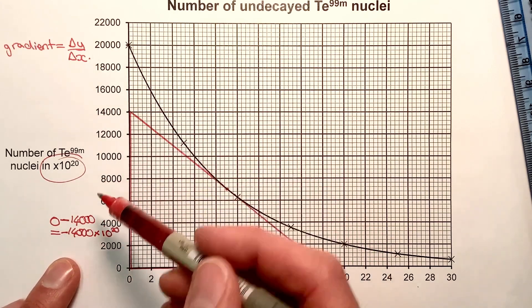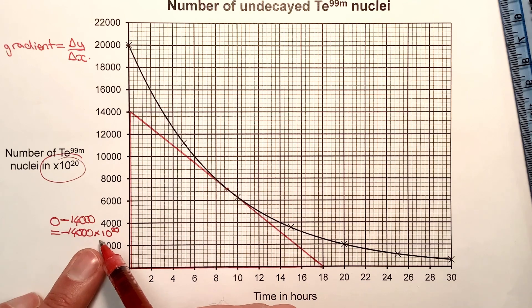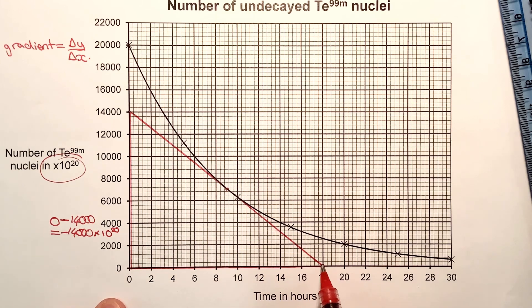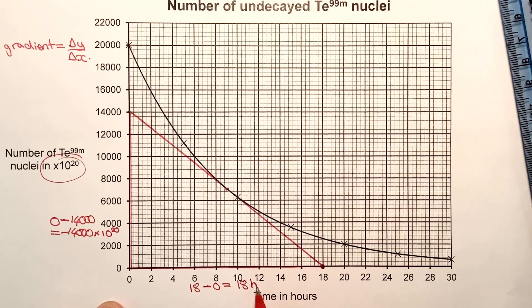So my change in the vertical is minus 14,000 times 10 to the 20. Now I need to calculate my change in the horizontal, and the final horizontal value is 18. So I'll do 18 minus the starting horizontal value, which is 0, giving me 18 hours.